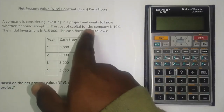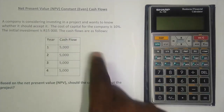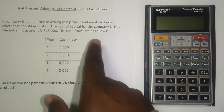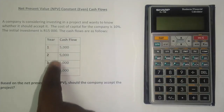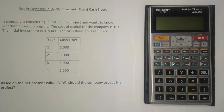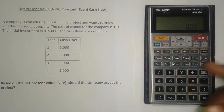Let's get into this one. A company is considering investing in a project and wants to know whether it should accept it. The cost of capital is 10%. The initial investment is 15,000 rand. Cash flows are given from year one through year four and they're all the same — that's what we mean by constant or even cash flows. We're asked: based on the net present value, should the company accept the project?